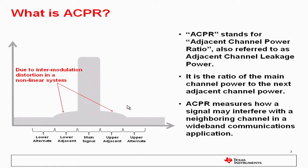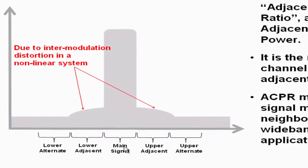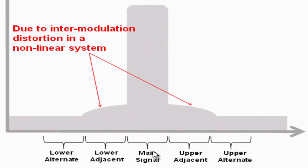The channels are referred to like this. There's the main signal, then slightly above that in frequency is the upper adjacent channel, and above that is the upper alternate channel. Below the main signal is the lower adjacent channel and the lower alternate channel.